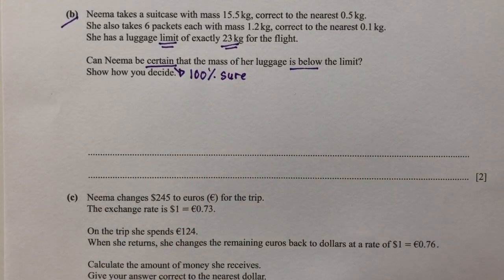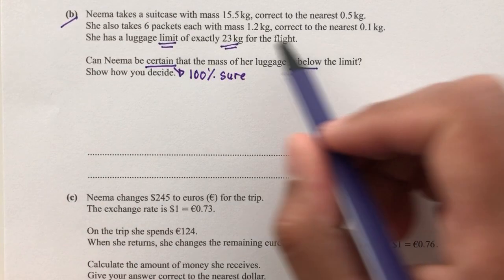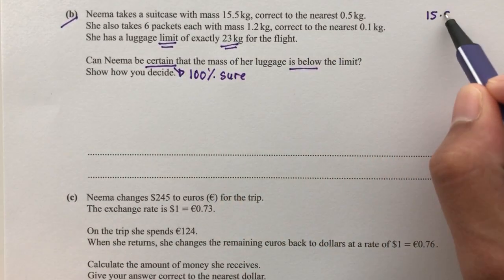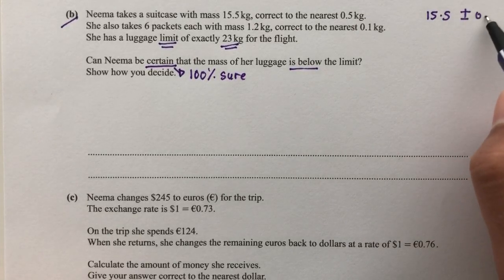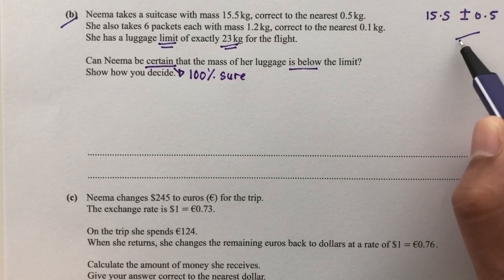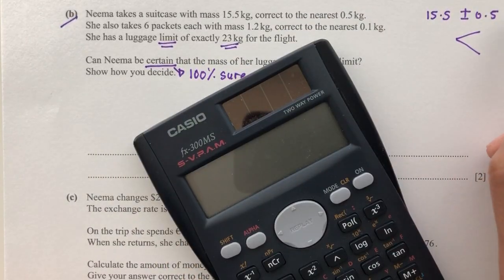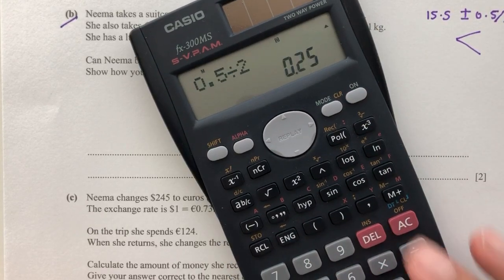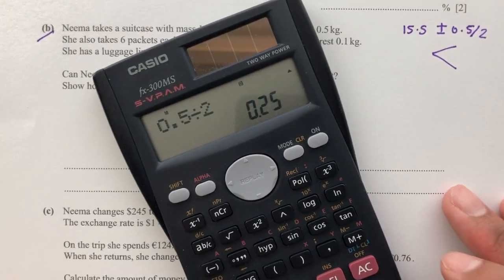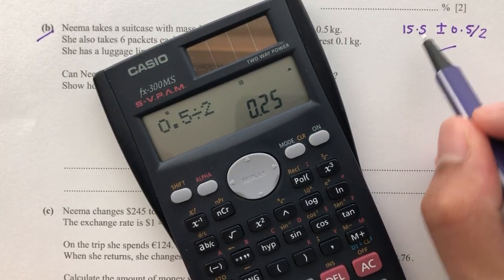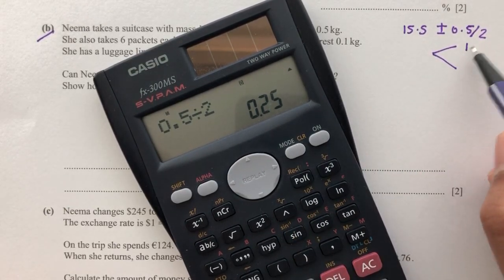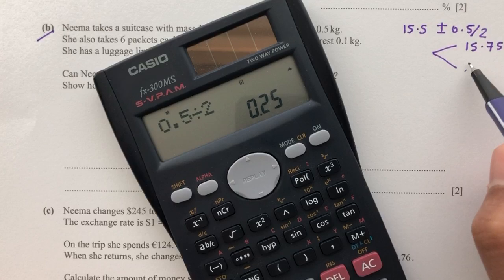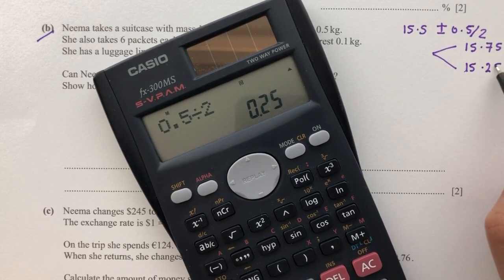'Certain' means she needs to be 100% sure that the mass of her luggage is below the limit. So let's find the upper and lower bounds. For the suitcase: 15.5 ± 0.5, and 0.5 divided by 2 gives 0.25. So the upper bound is 15.5 + 0.25 = 15.75, and the lower bound is 15.5 − 0.25 = 15.25.